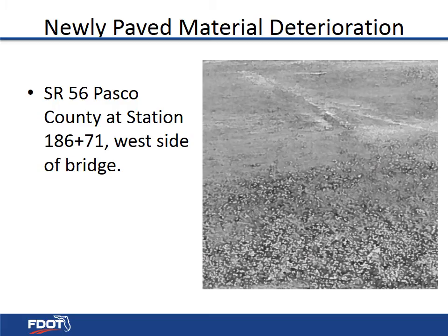The raveling process can happen rather quickly, as seen on the active project on State Road 56 in Pasco County. This area, located near the bridge at station 186 plus 71, is segregated and has already begun to ravel out. In cases such as this one, no cores are necessary — the area must be removed and replaced.